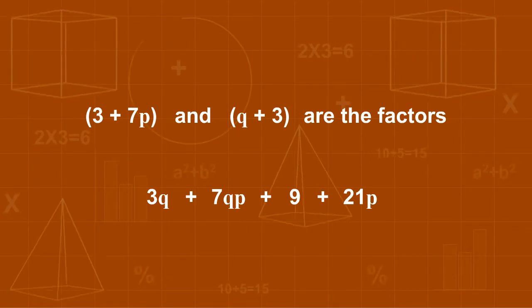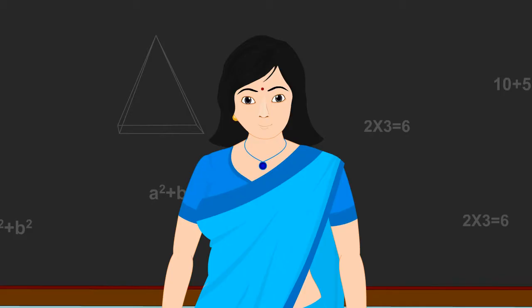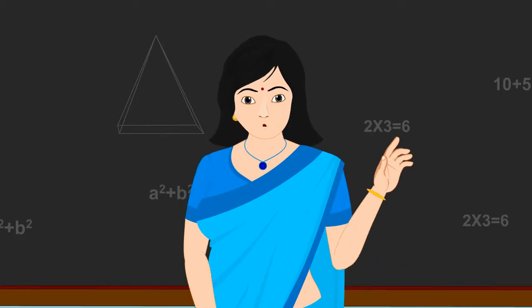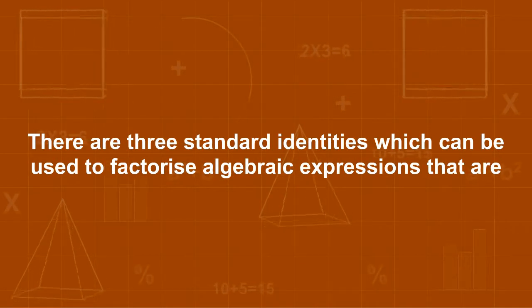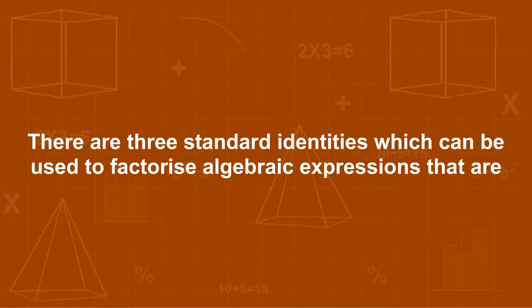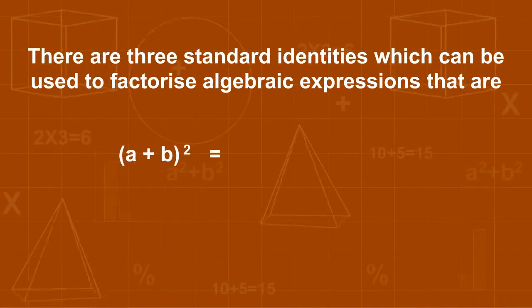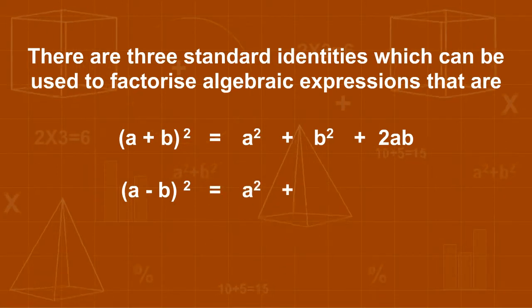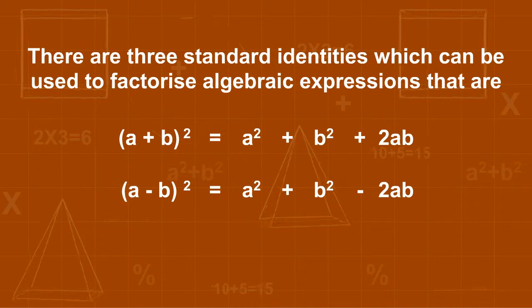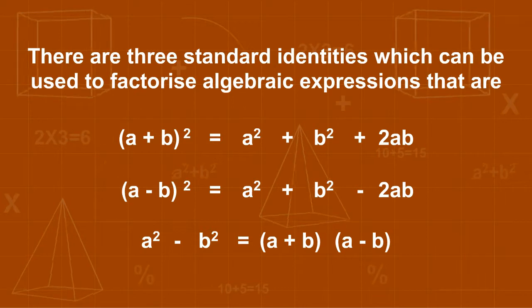Factorization using identities. The identities we have learnt earlier are useful in determining the factors of a given polynomial. There are 3 standard identities: (a + b)² = a² + b² + 2ab; (a − b)² = a² + b² − 2ab; and a² − b² = (a + b)(a − b).